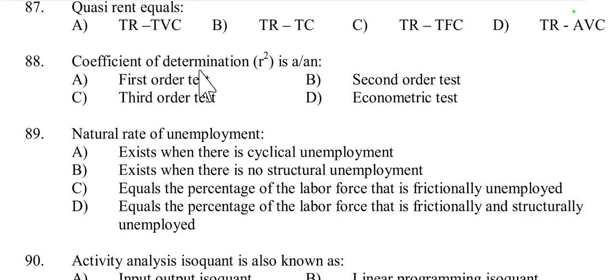Question number 88: The coefficient of determination, or R-squared, is an econometric test. The coefficient of determination is a number between 0 and 1 that measures how well a statistical model predicts an outcome. It is generally considered an econometric measure because it helps assess the goodness of fit of a regression model by indicating the proportion of variance in the dependent variable that is predictable from the independent variable.